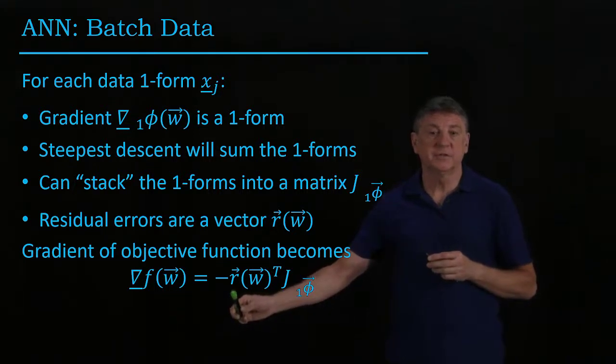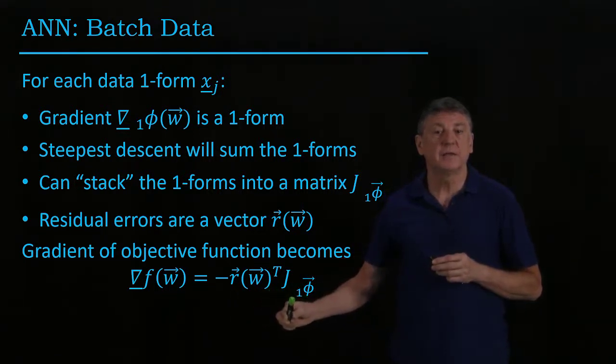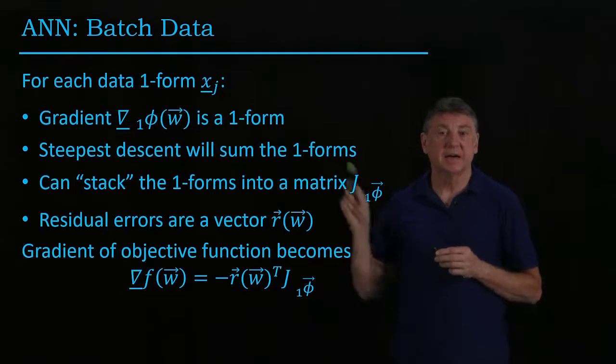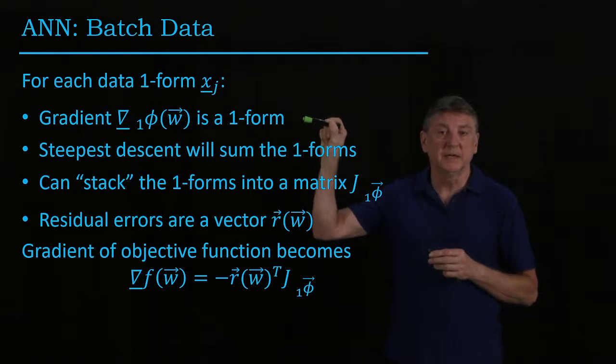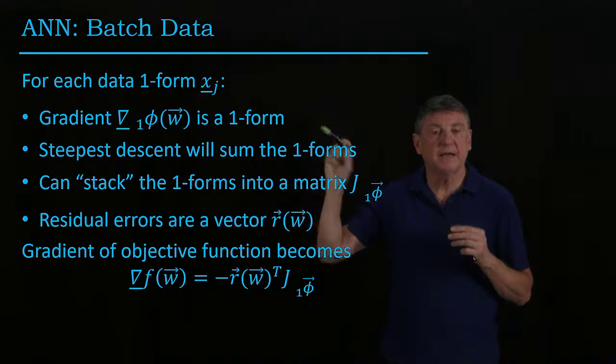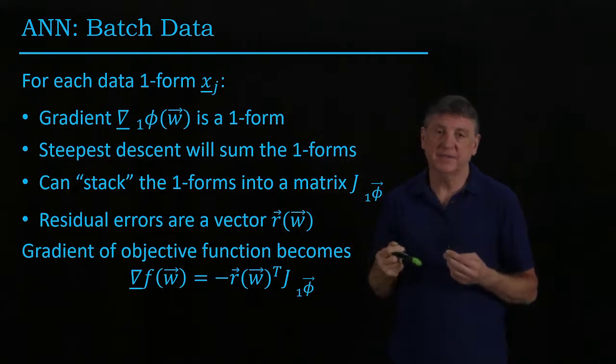We'll take the residual errors, transpose them, and multiply them by this stack of the gradient one-forms for each one of those data. So each one of these gradient one-forms is created as we described in the previous session.